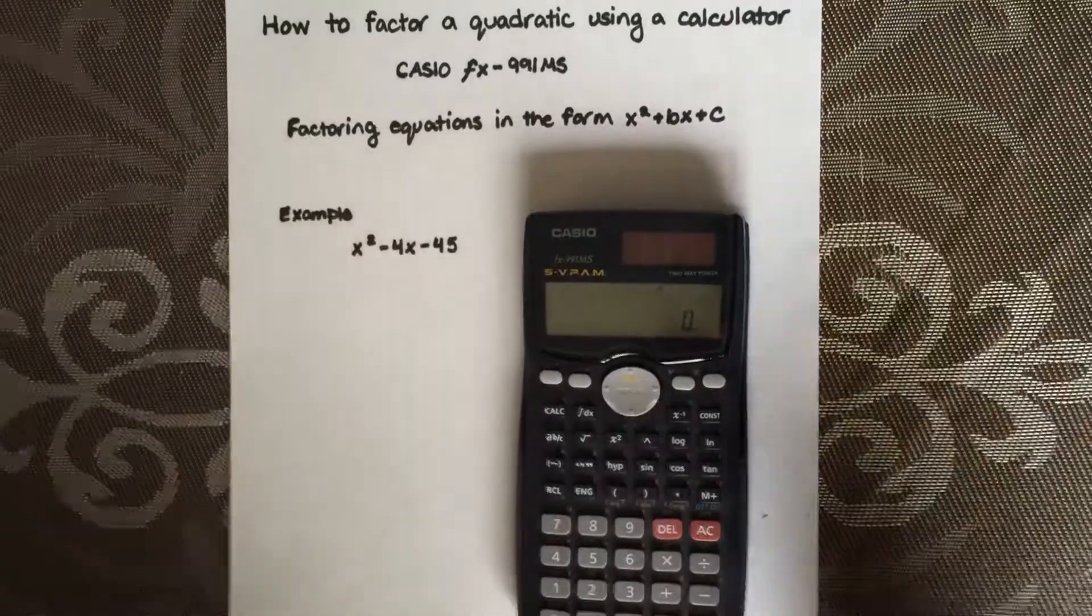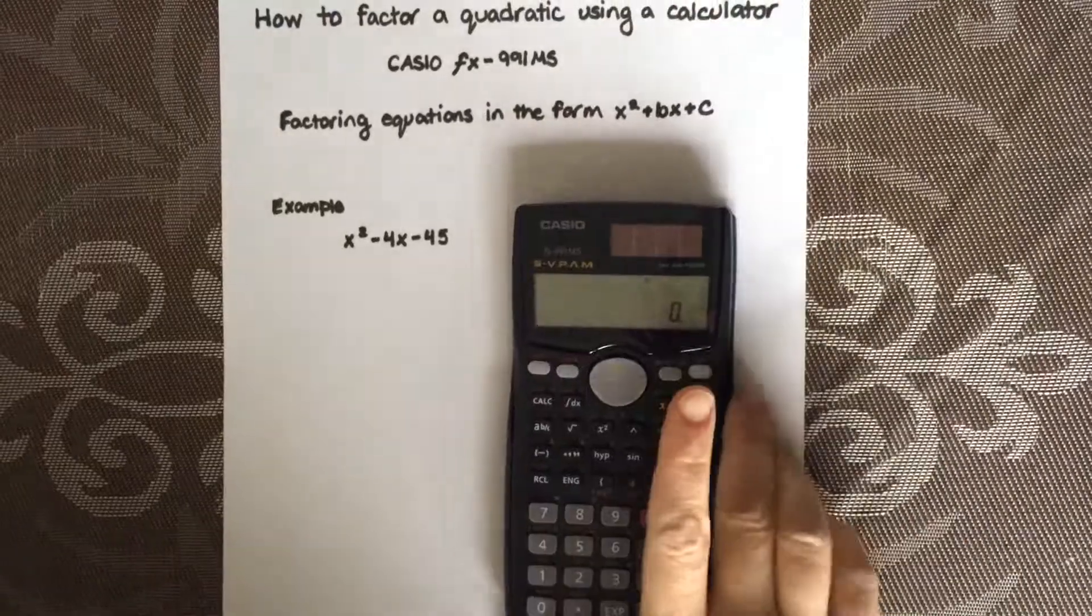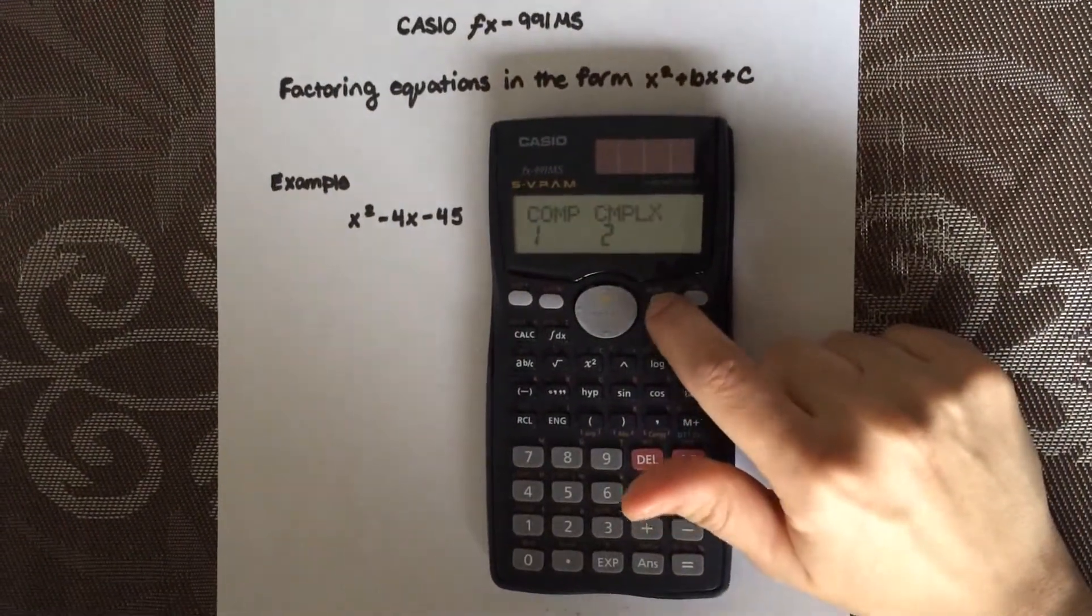Using this example x squared minus 4x minus 45, first thing you would have to do, go to your calculator, select mode three times.